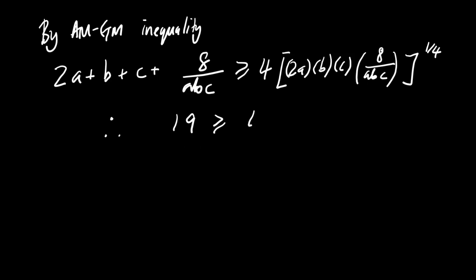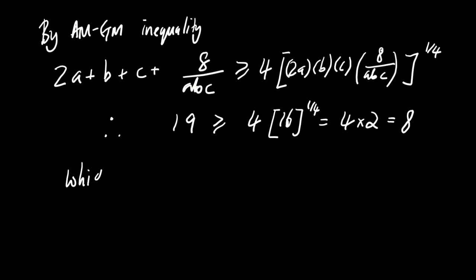Simplifying further, we get 19 is greater than or equal to 4 times the 4th root of 16, which gives us 4 times 2, resulting in 8. Therefore this inequality is true, but the question remains: what is the maximum value of A?